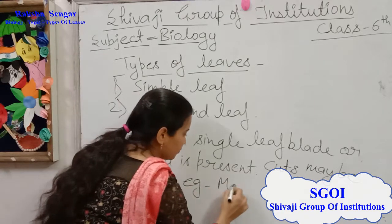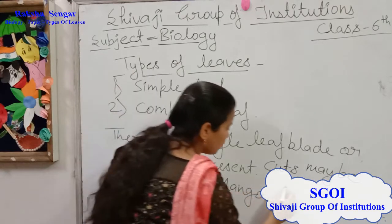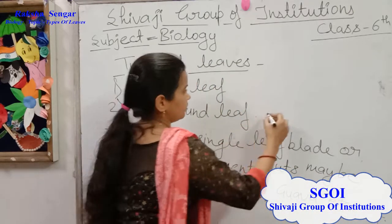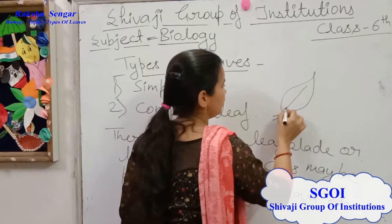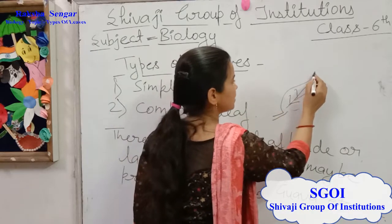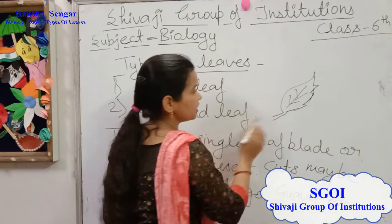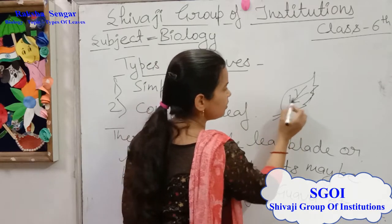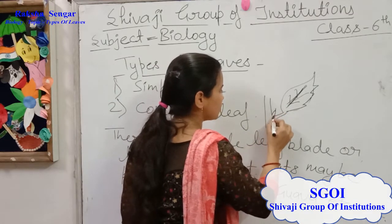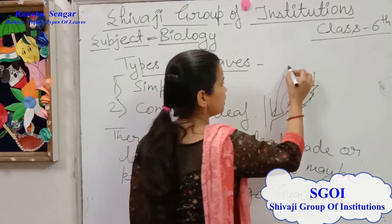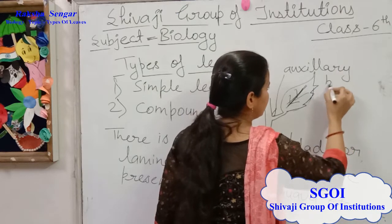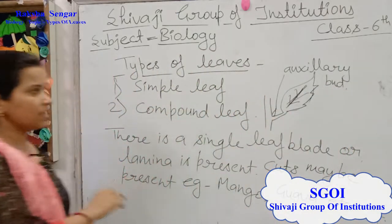For example, mango and guava. The lamina is not divided into any parts; the cuts may be present like this, but these cuts do not reach up to the midrib. This is the midrib. In a simple leaf, there is also an axillary bud present.